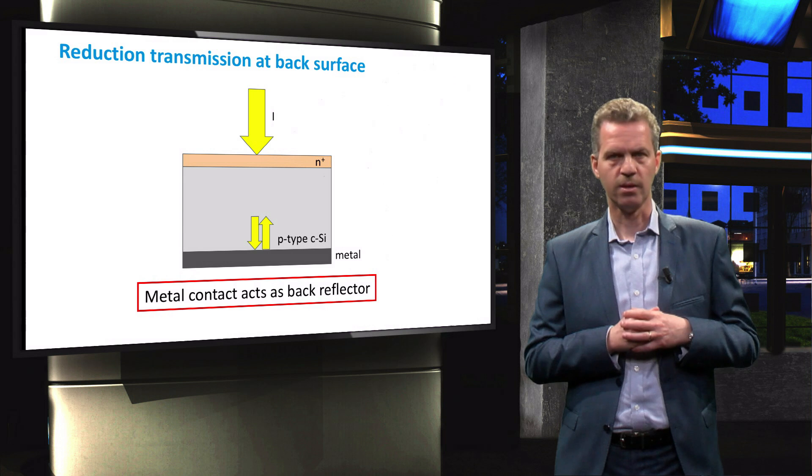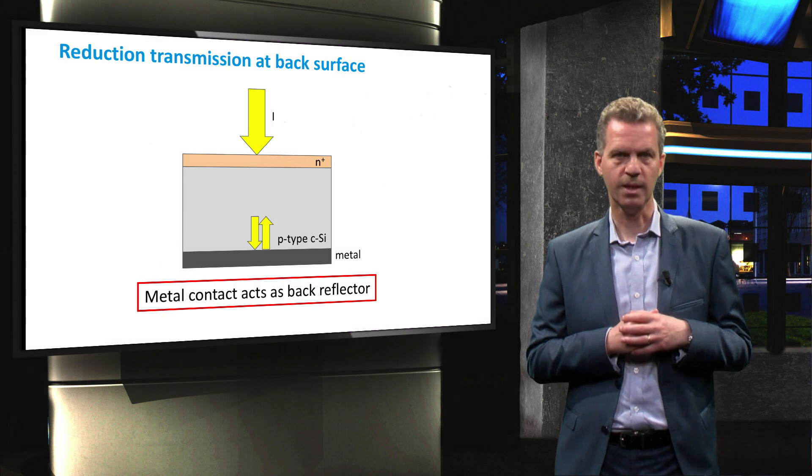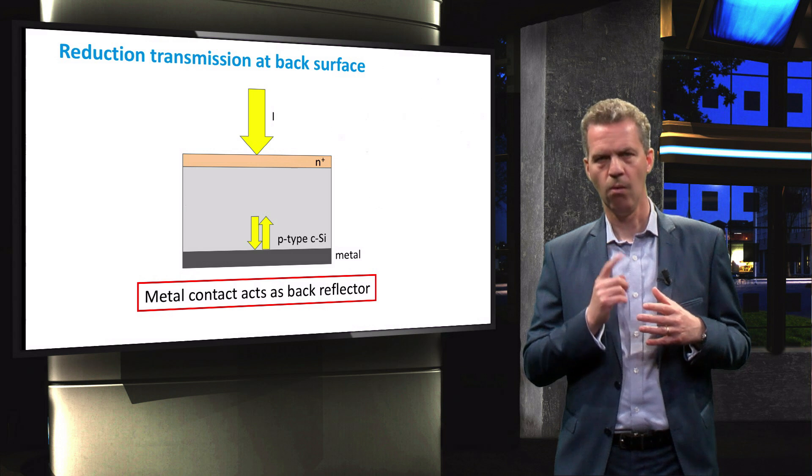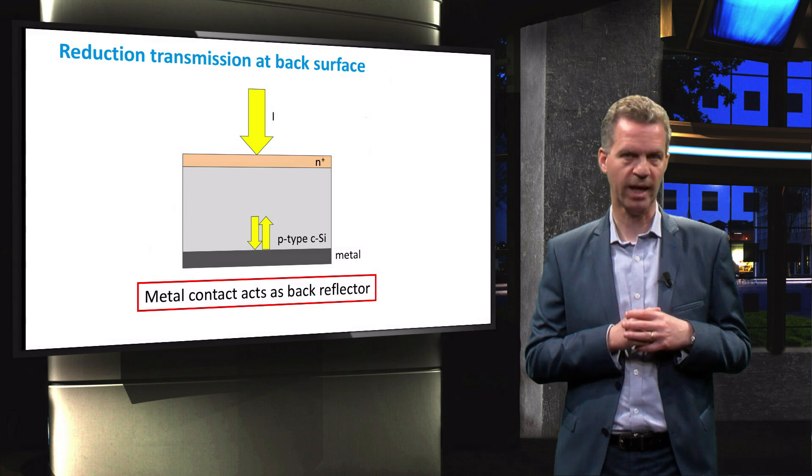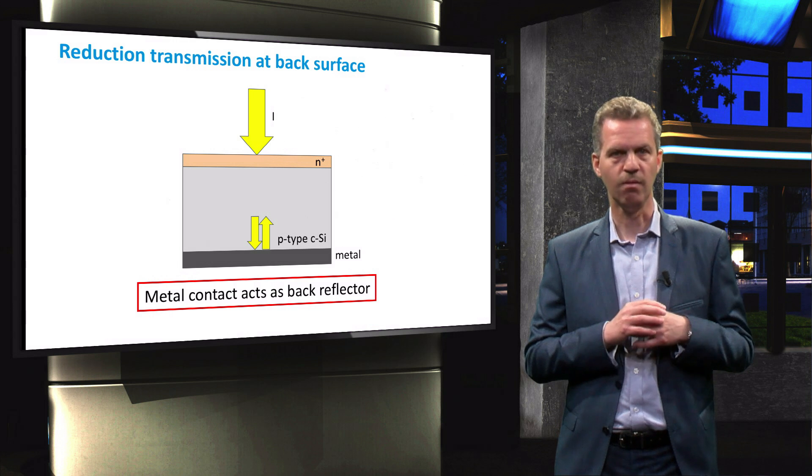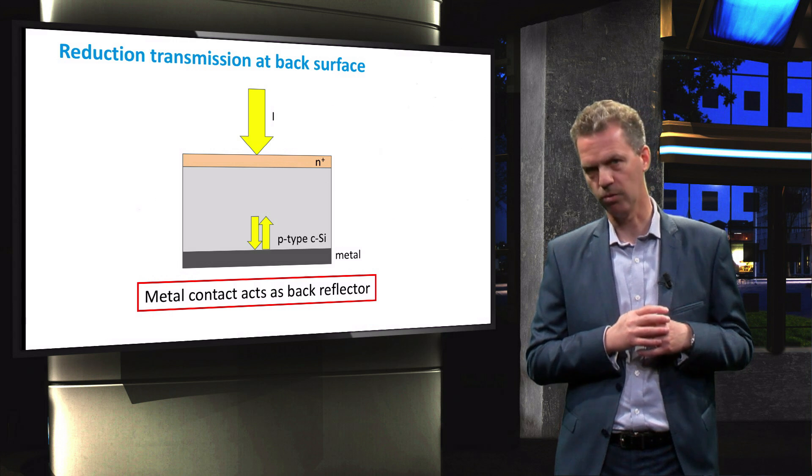Now since the path length of light through the material is the issue, there are two other useful solutions. One method is to use a back reflector, which is in the standard crystalline silicon solar cell design, is present in the form of a fully metalized back contact.